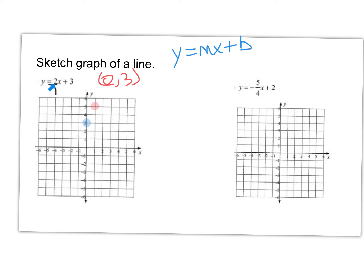Again, it's a slope of 2, which is 2 over 1. Rise over run, so 1, 2, and over 1. That's our equation, and we can draw a line through that. That would be our sketch.